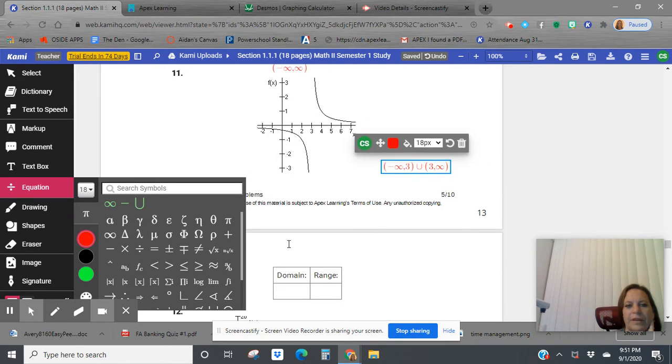So that's my answer for domain for that one. For the range, it goes all the way from negative infinity up to zero. Notice again, there's no values at zero. And then it goes from zero up to infinity again. So for my range, we're going to say from negative infinity to zero and then zero to infinity.